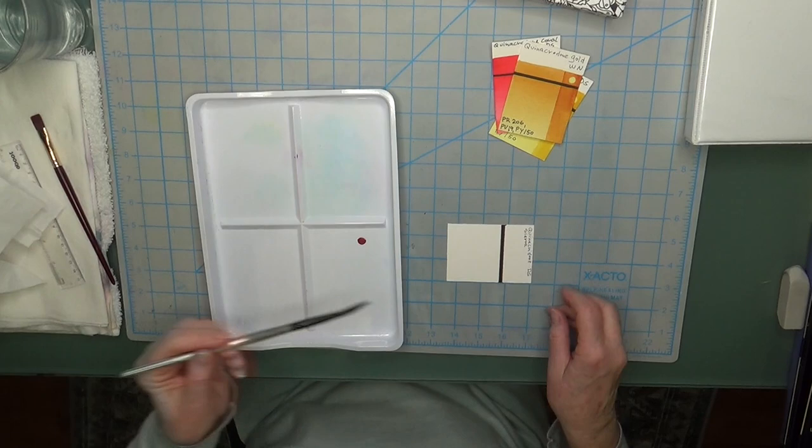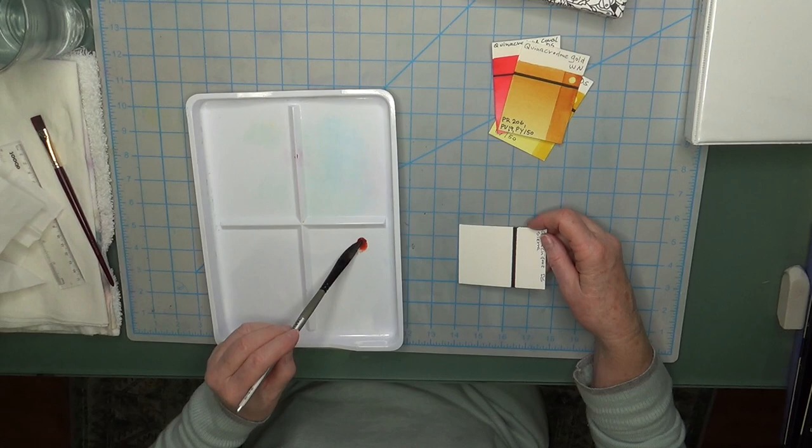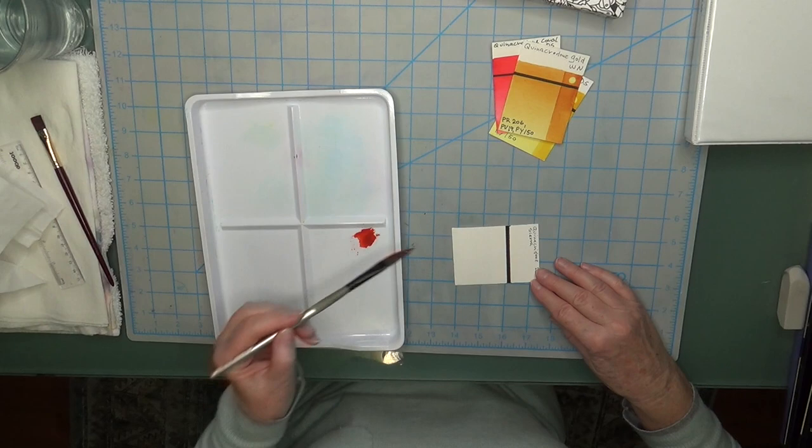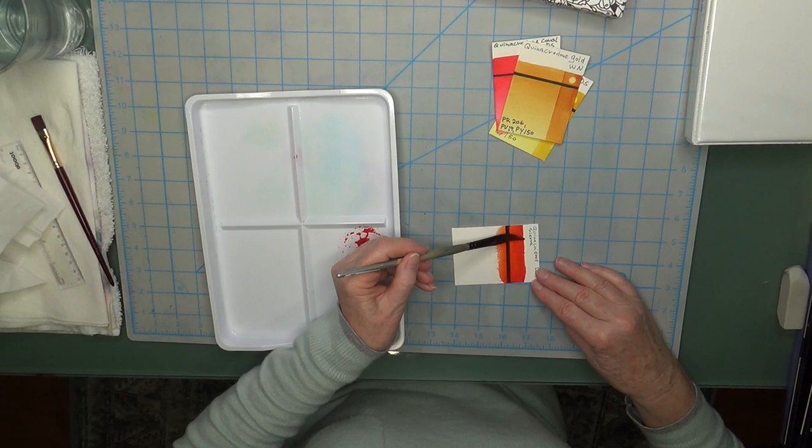First I'm going to put clean water on about two thirds below the black line. That's how I do every swatch, trying to do them somewhat the same. Let's load up our brush. I'm using my half inch dagger brush. I start above the line because the whole idea is I want to see how transparent or opaque the color is. I want full strength up here.